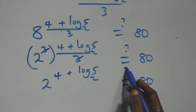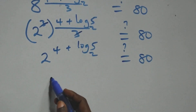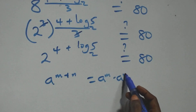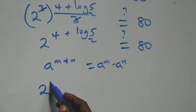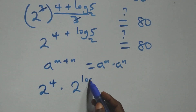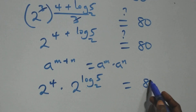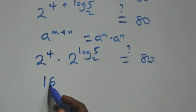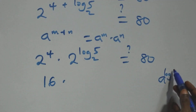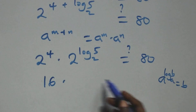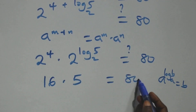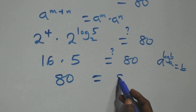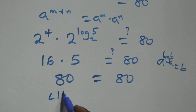Using the rule a^(m+n) = a^m · a^n, this becomes 2⁴ × 2^(log₂5) = 80. By the identity a^(log_a(b)) = b, we have 2^(log₂5) = 5. So 16 × 5 = 80, which equals 80. The left-hand side equals the right-hand side.